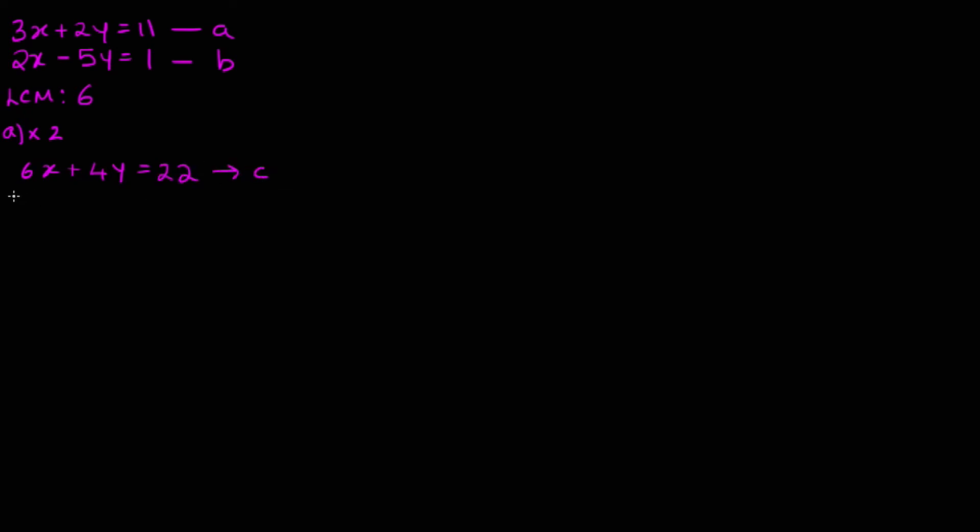And then what do you do? And then you multiply B by 3, which is 6X minus 15Y equals 3. And just in case you make a mistake, try it out somewhere else.